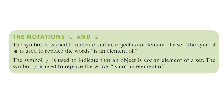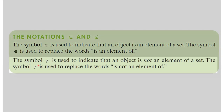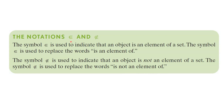Now we will learn two very important notations in set theory. The symbol ∈ is used to indicate that an object is an element of a set, replacing the words 'is an element of.' The symbol ∉ (with a slanted line) is used to indicate that an object is not an element of a set, replacing the words 'is not an element of.'